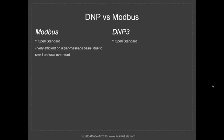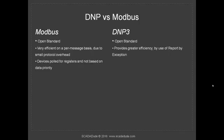Modiverse is very efficient on a per-message basis because overall it's got a small overhead to it. DMP on the other hand is supposed to be even more efficient. The packet is a little bigger, but since it uses the concept of report-by-exception built-in, it's easier for it to do that.